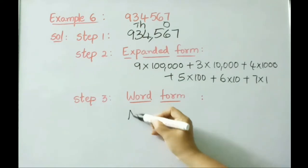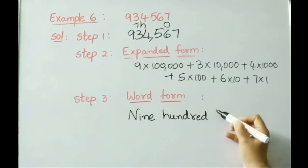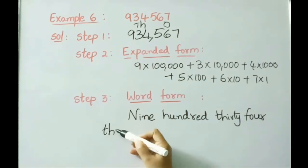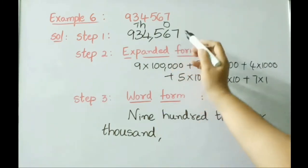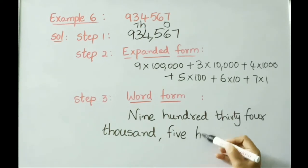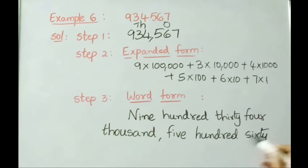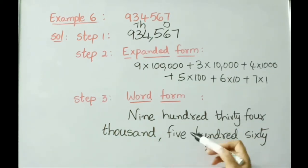Now let us write and read the word form: 934,567 — nine hundred thirty-four thousand, five hundred sixty-seven. Now let us see another example.